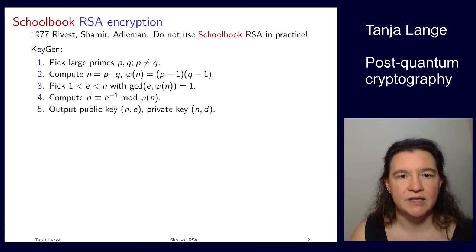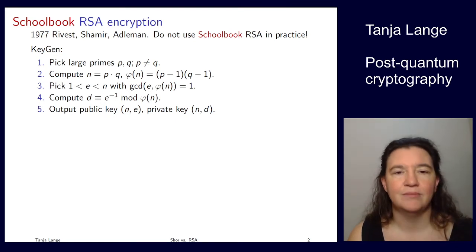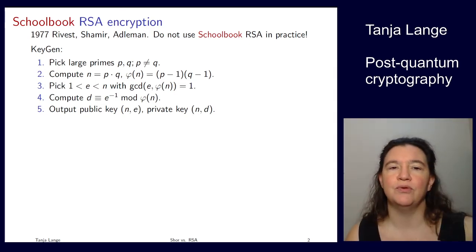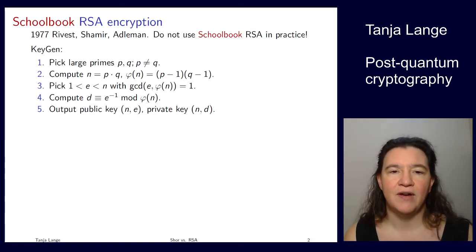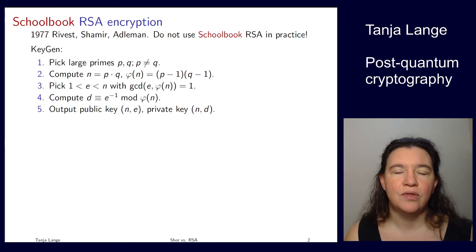The key generation of RSA starts by picking two large primes p and q and they have to be distinct. They also have to be sufficiently large and sufficiently different so that the attacker cannot gain any information from those. And then you do the following steps. So you compute the product, you compute the phi function, and so that one is just (p-1) times (q-1) because those are prime, and you pick some e.